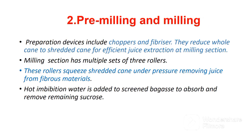The second stage of sugar cane processing is pre-milling and milling. The pre-milling section has preparation devices like choppers and fibrizer. The function of these devices is to reduce whole cane to shredded cane for efficient juice extraction at the milling section.